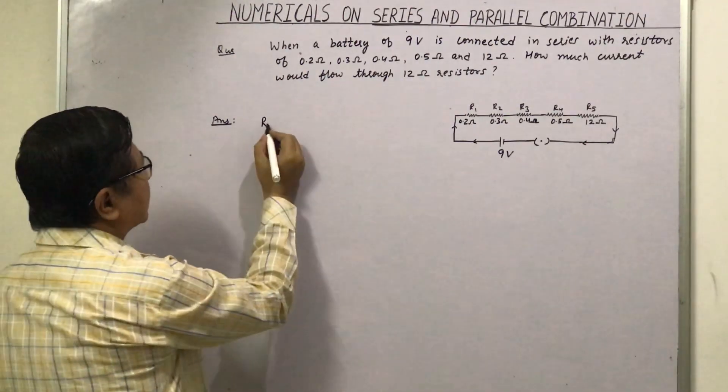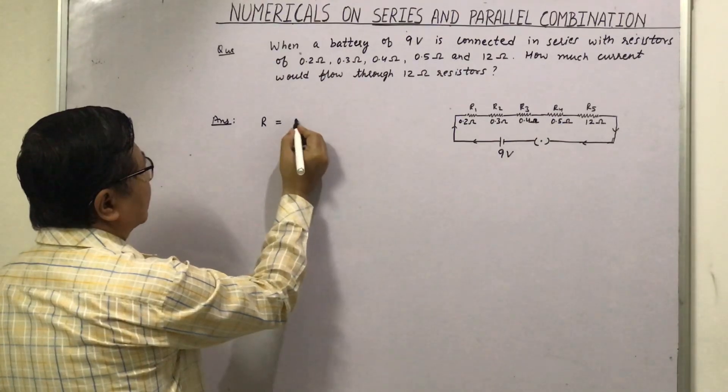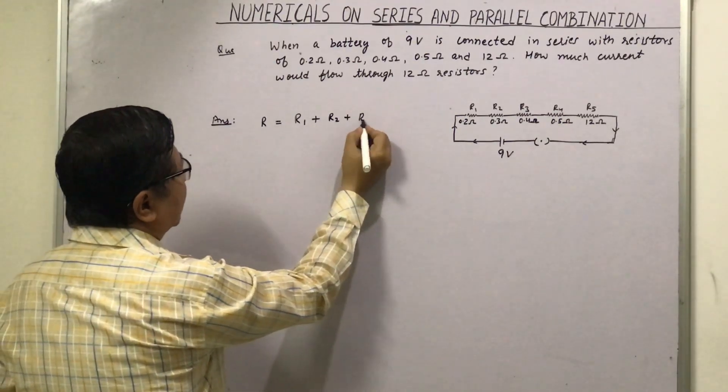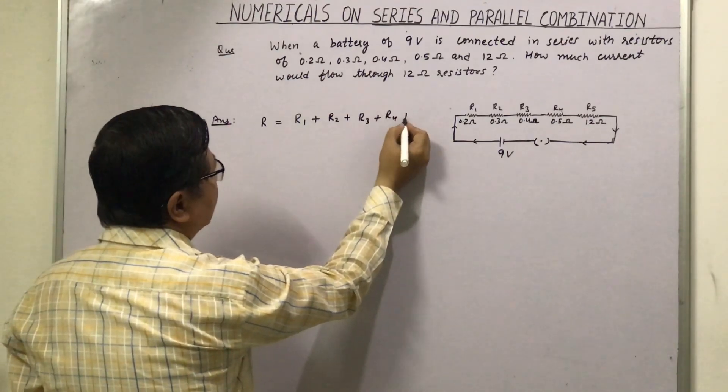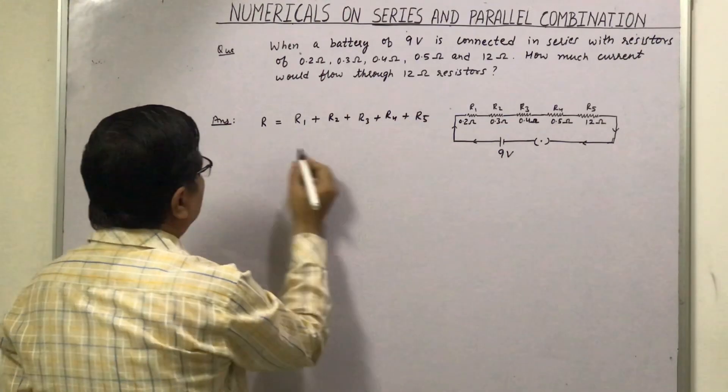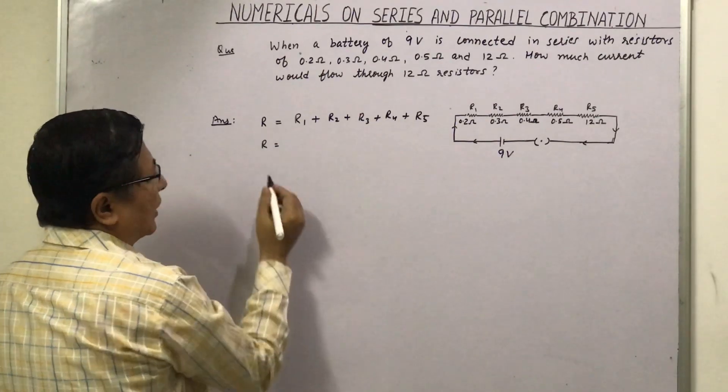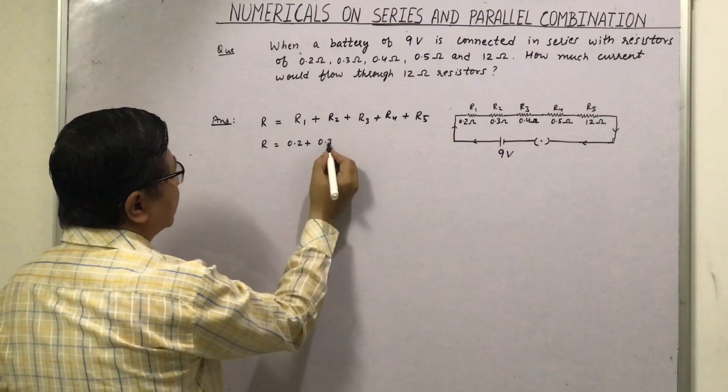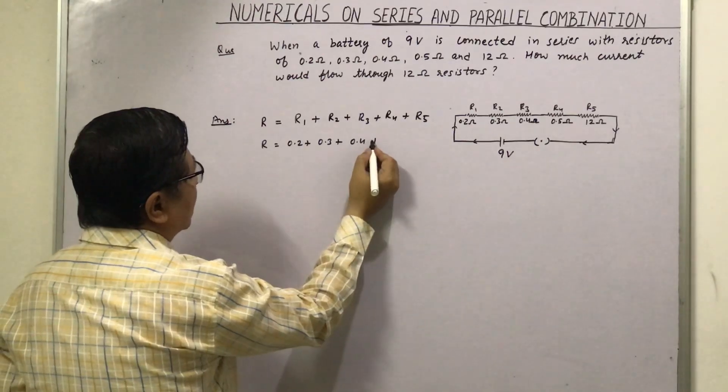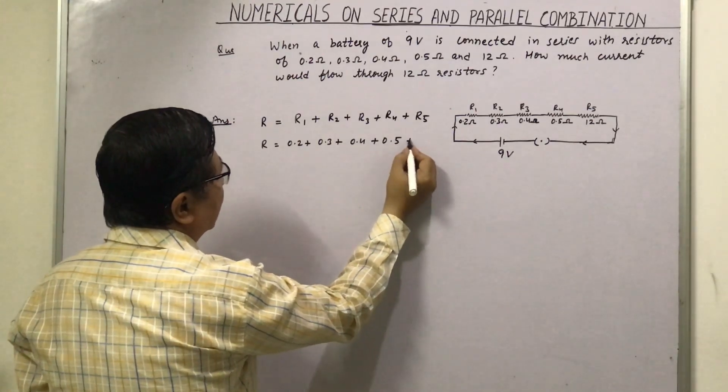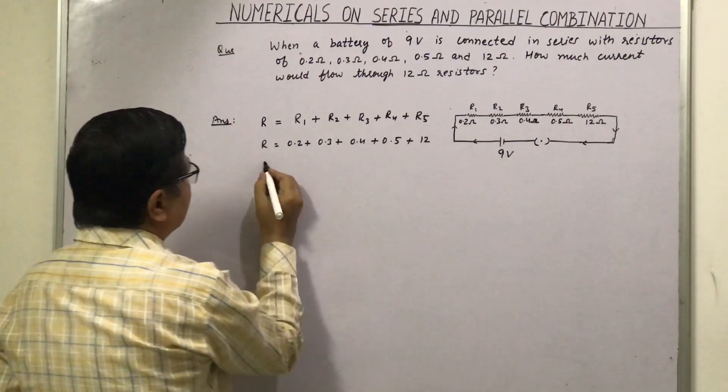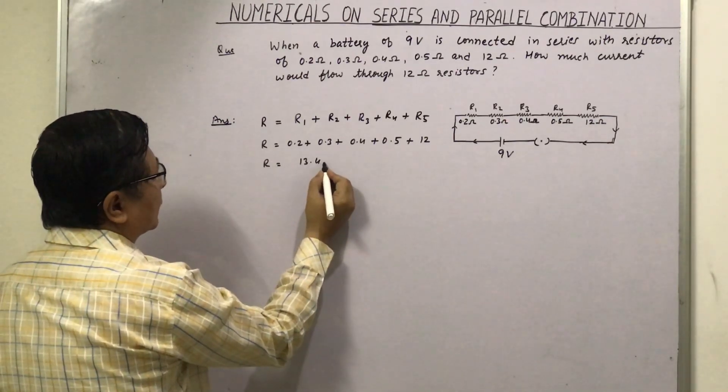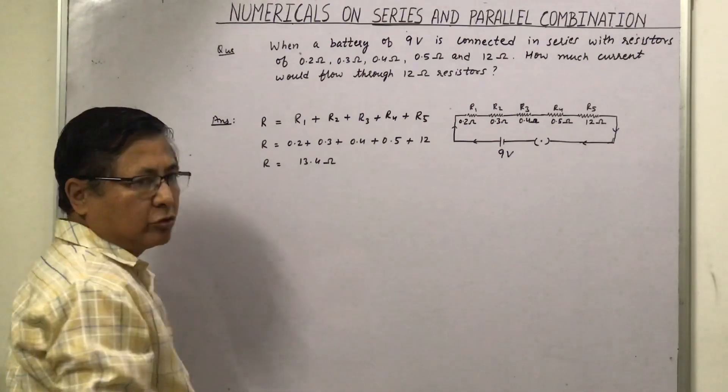So resistance in series can be given by the formula R is equal to R1 plus R2 plus R3 plus R4 plus R5, and that is equal to 0.2 plus 0.3 plus 0.4 plus 0.5 plus 12 ohm. So we will add this together, we will get answer 13.4 ohm.